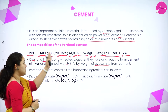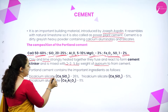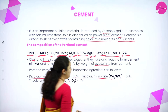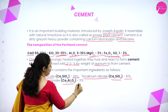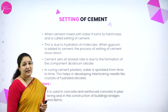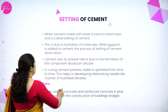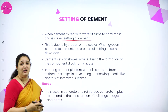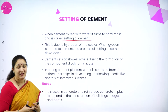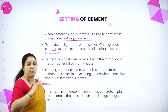Portland cement composition includes: dicalcium silicate Ca₂SiO₄ at 26%, tricalcium silicate Ca₃SiO₄ at 51%, and tricalcium aluminate Ca₃Al₂O₆ at 11%. When cement is mixed with water, it forms a hard mass — this is called setting of cement — due to hydration of molecules. The speed of setting is reduced by adding gypsum.